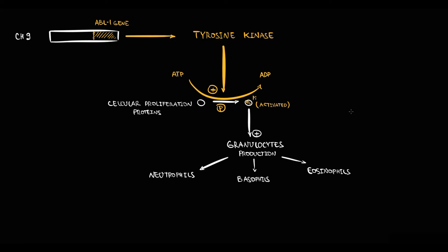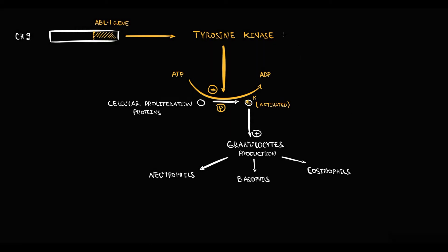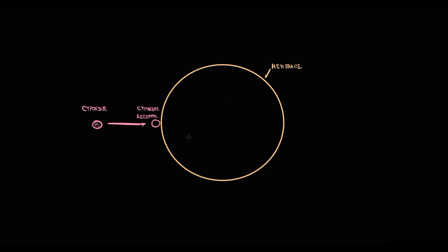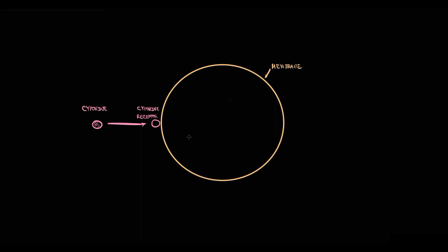Importantly, tyrosine kinase serves as a conductor. It receives a signal via cytokines and only then begins to phosphorylate intracellular proteins. Recall that because cytokines have a protein structure and proteins are polar molecules, they cannot diffuse into the cell. They require a receptor on the surface of the cell to receive the signal and transmit it into the nucleus. So when cytokines act on a cytokine receptor on the cell surface, tyrosine kinase is required to deliver this signal into the nucleus — it is basically just the conductor.